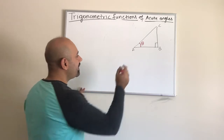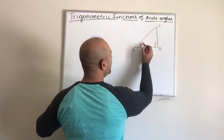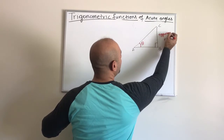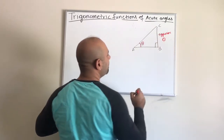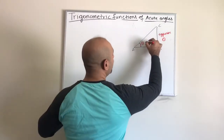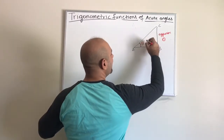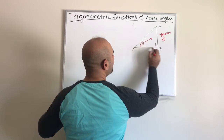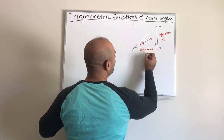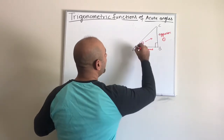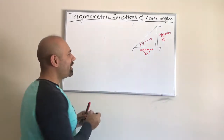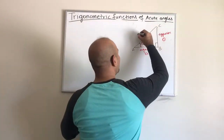Based on this reference angle, the side directly across from it is called the opposite side — I'll refer to it by the first initial, O. This other leg is going to be my adjacent, A. And the longest side is always called the hypotenuse, H — we already know that.